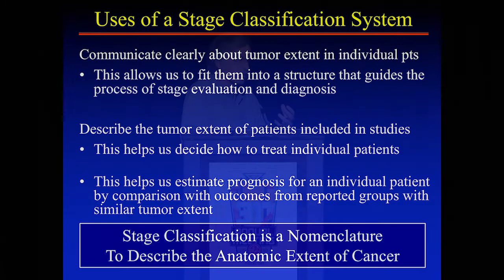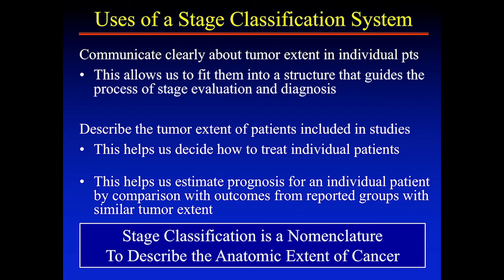It also gives us an assessment of prognosis, because certainly the disease burden a patient has is an important factor. But fundamentally it really is an ability to describe the anatomic extent of disease — that's fundamentally what it is. The rest of it is how we use that: to guide treatment, to talk about patients, to estimate prognosis.